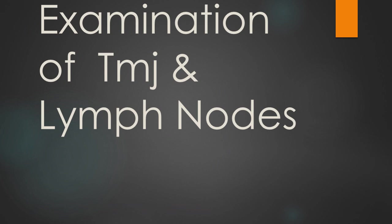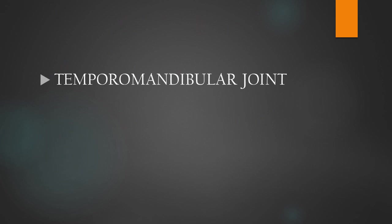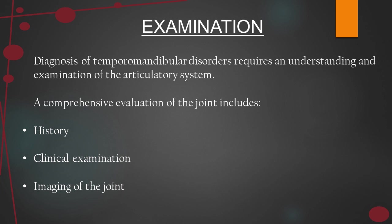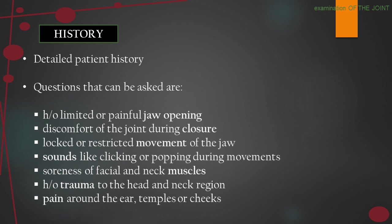Next we study the examination of TMJ and lymph nodes. The temporomandibular joint connects the jaw bone to the skull. Diagnosis of TMJ disorders requires an understanding and examination of the articulatory system. In the history, the patient is asked about limited or painful jaw opening, discomfort of the joint during closure, locked or restricted movement of the jaw, sounds like clicking or popping during movements, soreness of facial and neck muscles, history of trauma to the head and neck region, and pain around the ear, temples, or cheeks.